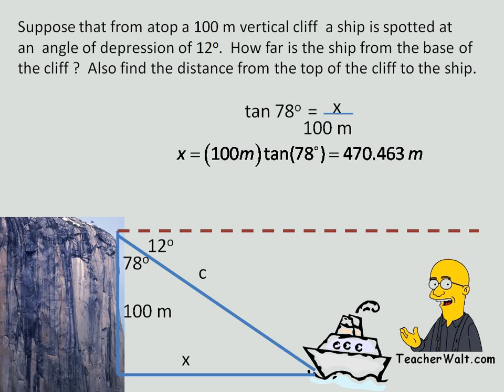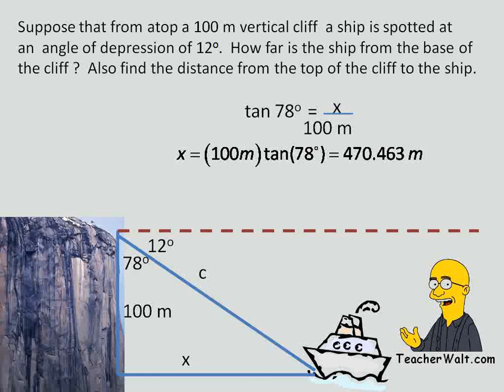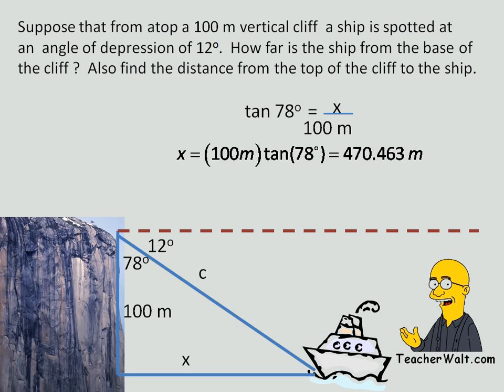Now, at this point, you could use the Pythagorean theorem to find c. But since we're studying right angle trig, let's go ahead and use our trig functions. We need a way to relate 78, 100, and c. Well, what comes to mind is we've got an adjacent side and a hypotenuse, so perhaps cosine. Cosine 78 degrees equals the hypotenuse on the bottom and the 100 meters up top.